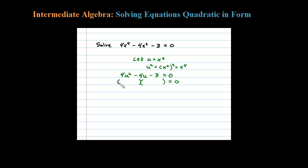Let's try to factor this. 2u times 2u is 4u squared, and 3 factors as 1 times 3. My middle term is gotten by multiplying 2u times 3, which is 6u, and 1 times 2u is 2u. So if the 6 is negative and the 2 is positive, then negative 6u plus 2u is negative 4u — so it's factored correctly. Then you set each factor equal to 0.